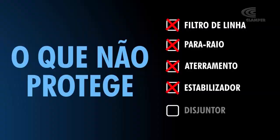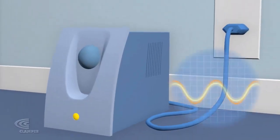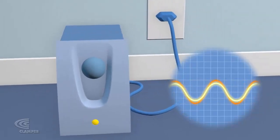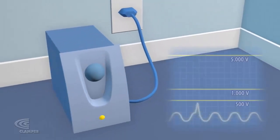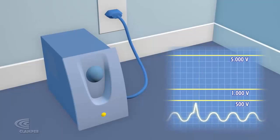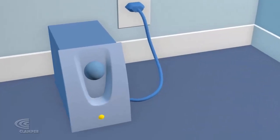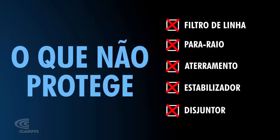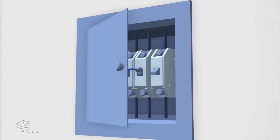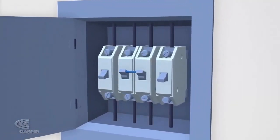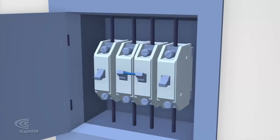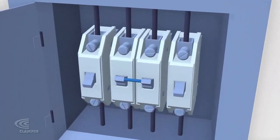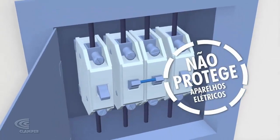Estabilizador: o estabilizador corrige a tensão da rede elétrica, adequando as pequenas variações, mas sua atuação implica em correções de pequenas voltagens. Os surtos elétricos causam variações de mais de 5.000 volts, portanto o estabilizador não protege seus equipamentos. Disjuntor: o disjuntor funciona como um interruptor automático que desarma em casos de curto-circuito ou sobrecarga elétrica, evitando que a instalação elétrica pegue fogo, mas não protege equipamentos contra surtos elétricos.